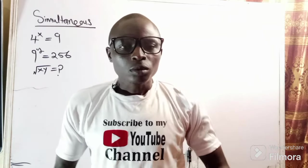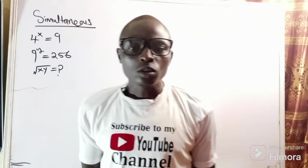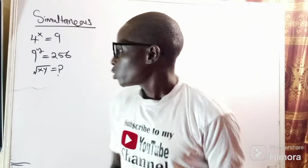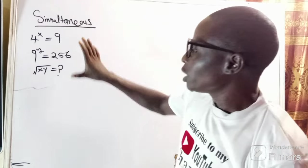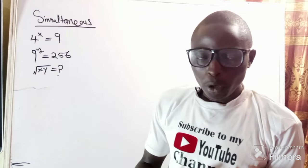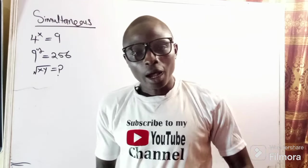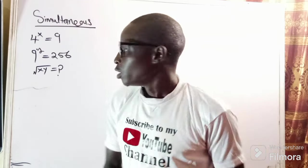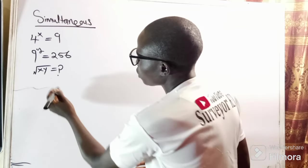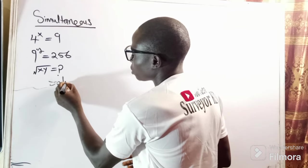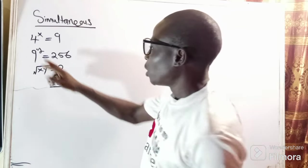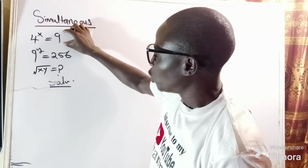We know that equations come in different forms. In this case we have a simultaneous equation — a combination of simultaneous equations and indices. So let's see how we can tackle this. Solution: the first equation, 4 to the power of x...